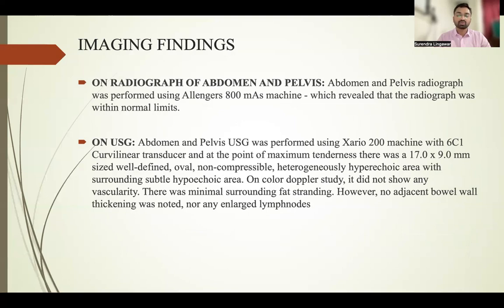USG of the abdomen and pelvis was performed on the Xario 200 machine with a 6C1 curvilinear transducer at the point of maximum tenderness. It showed a 17 x 9 mm well-defined, oval, non-compressible, heterogeneously hyperechoic area with surrounding subtle hyperechoic region. On color Doppler study, it did not show any vascularity. There was minimal surrounding fat stranding; however, no adjacent bowel wall thickening or enlarged lymph nodes were noted.